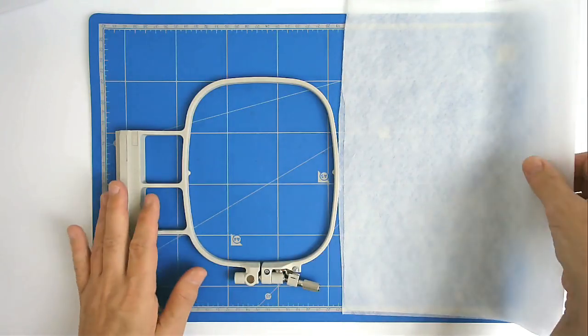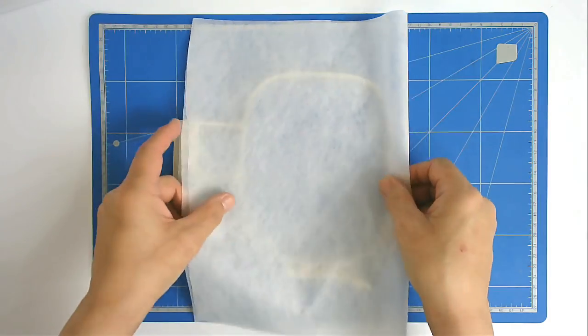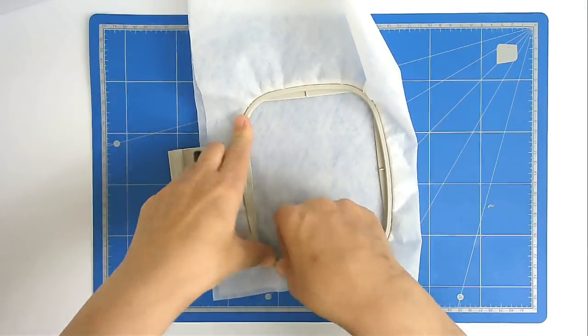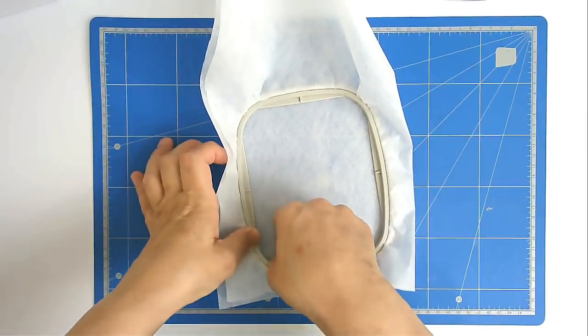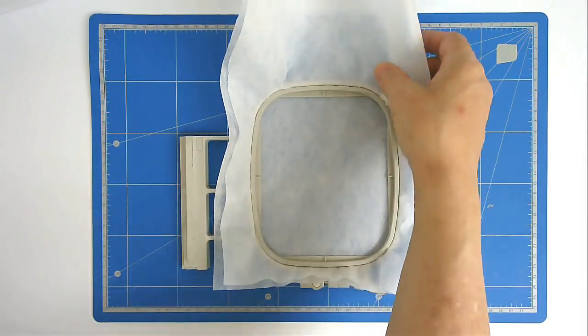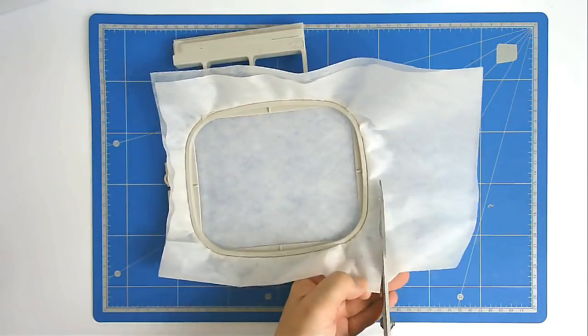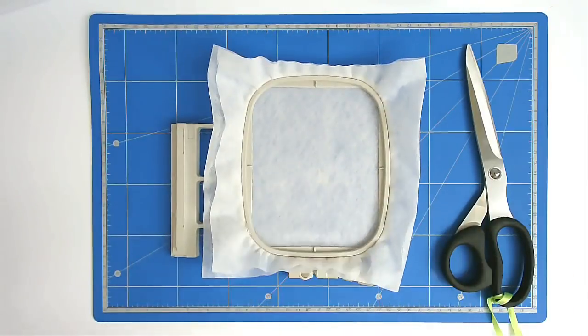First off, we're going to hoop two layers of wash-away stabilizer. I'm going to trim off the excess here because it's a bit much. I'm now going to pop that into my hoop and stitch around number one, and that's going to give me my placement outline.